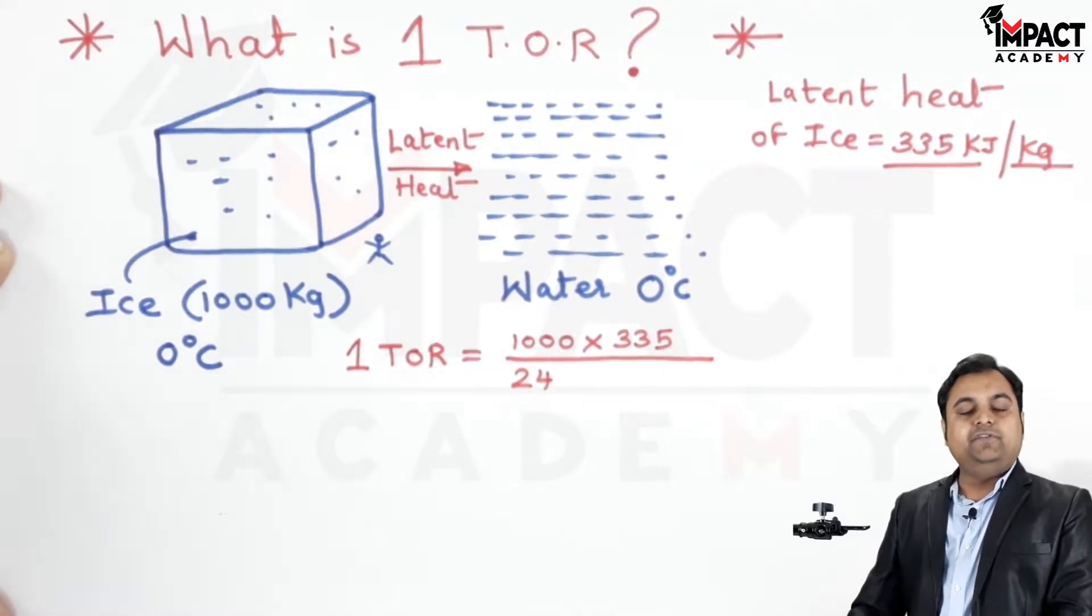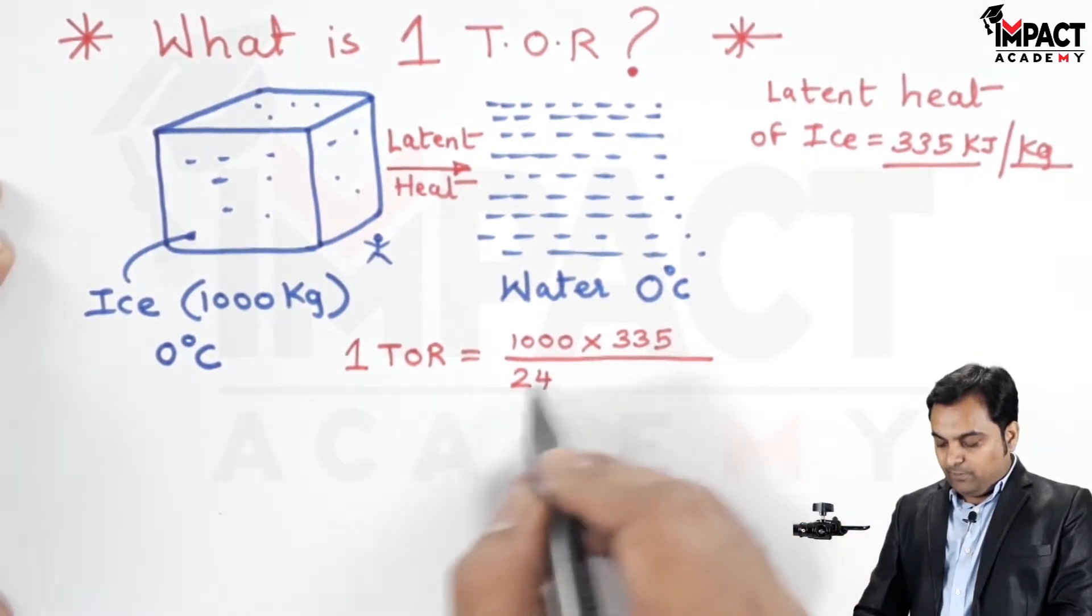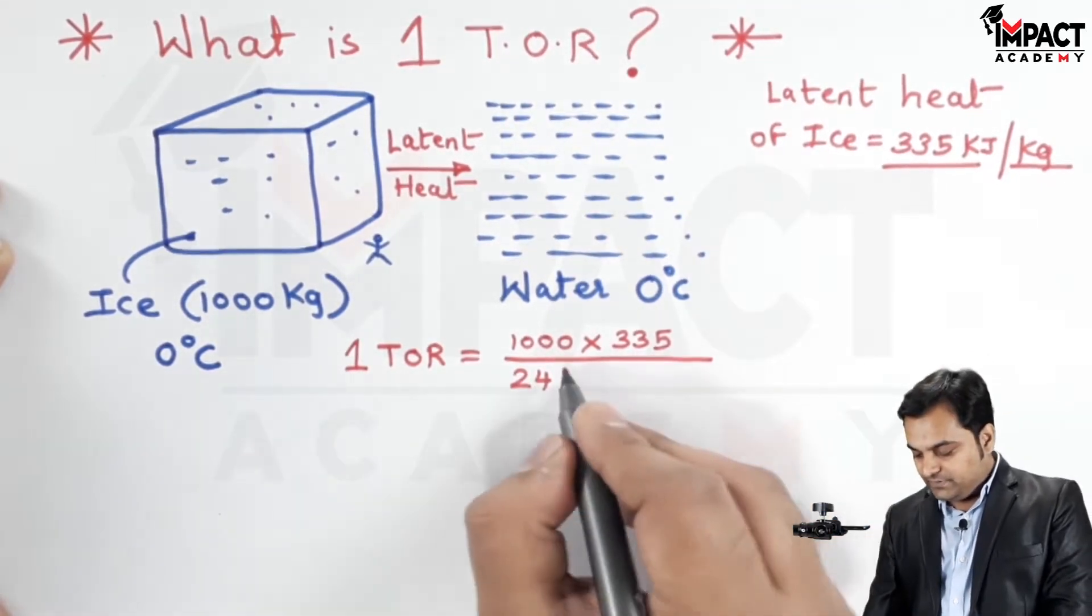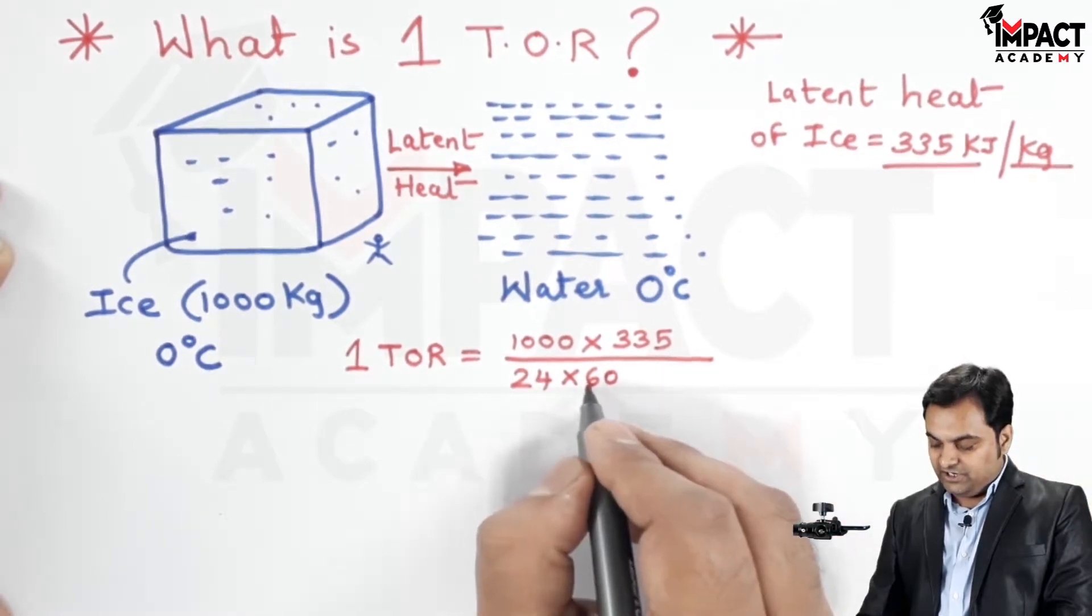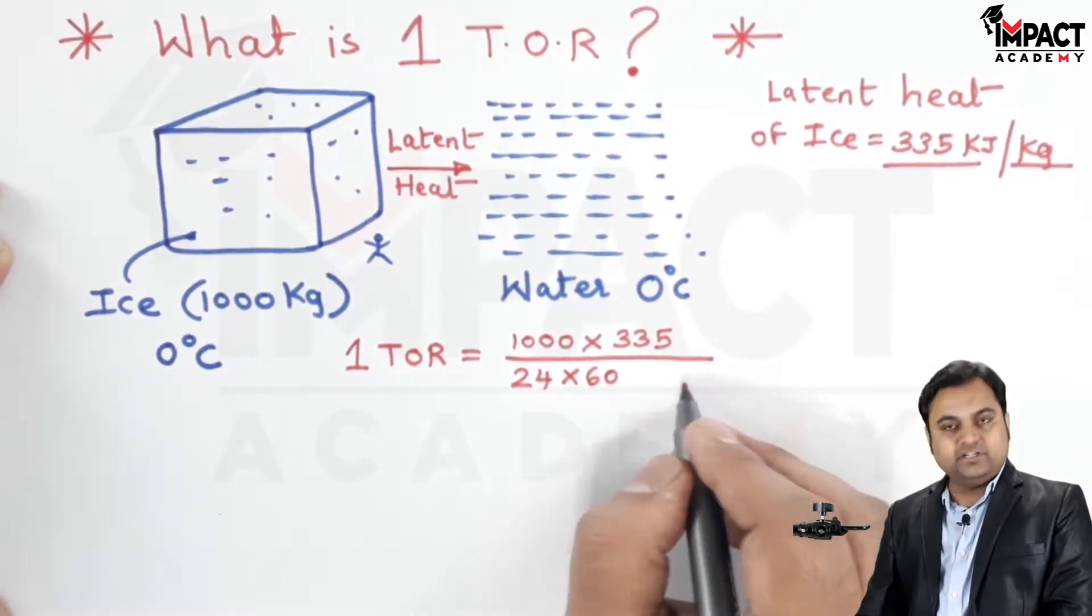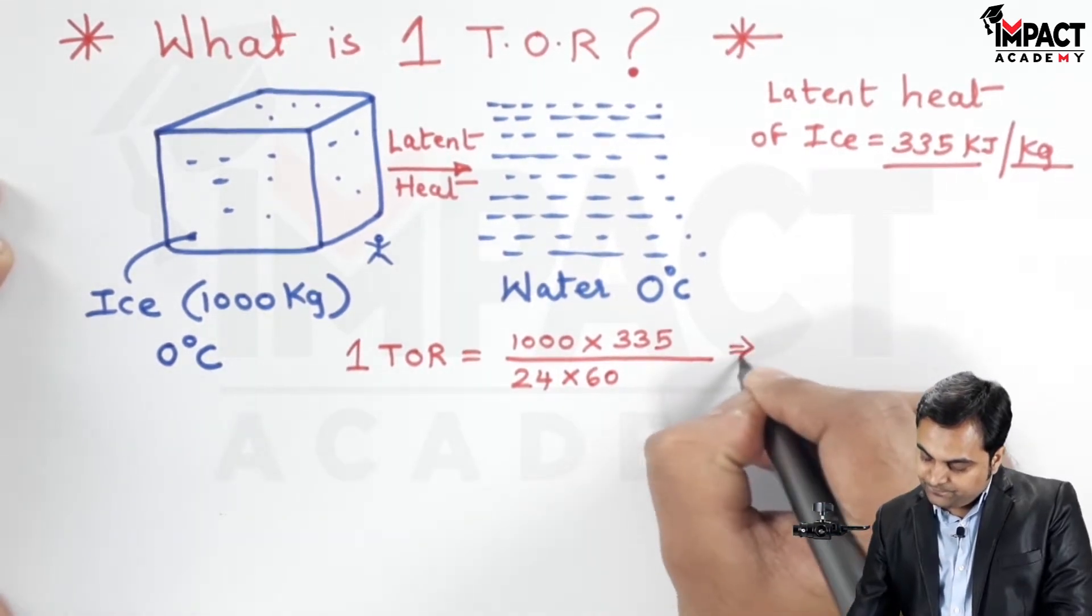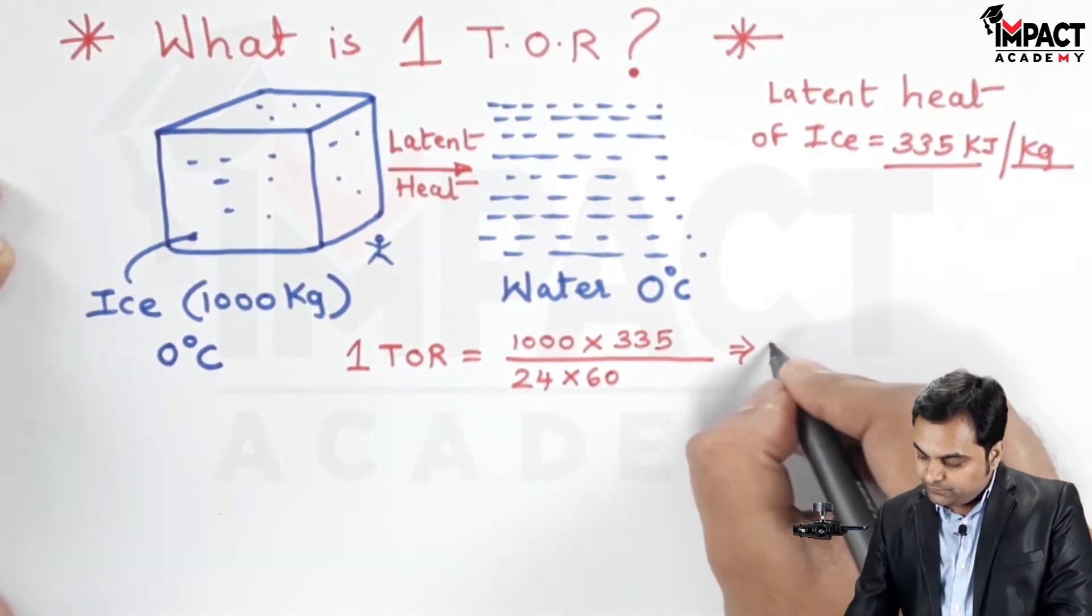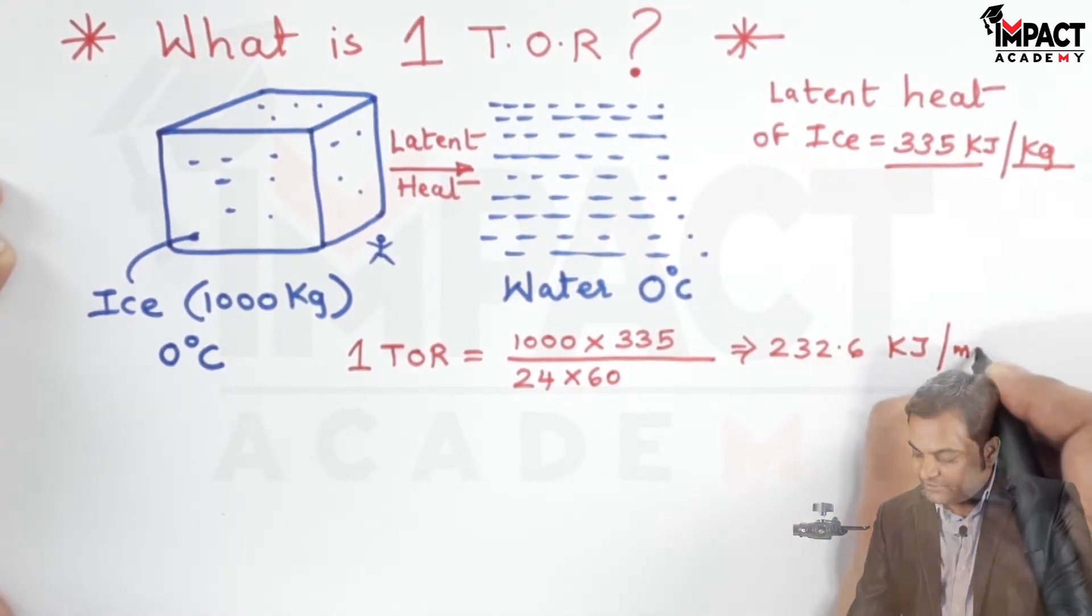Dividing by 24 will give us the uniform melting for one hour. Then by multiplying the denominator by 60, it would give the answer in terms of per minute, and that answer comes out to be 232.6 kilojoules per minute.